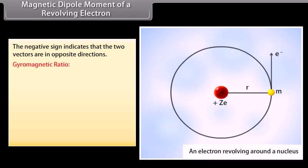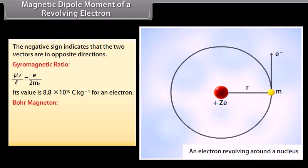The gyromagnetic ratio is μL/L = e/(2me), with a value of 8.8 × 10¹⁰ coulomb per kilogram for an electron. The Bohr magneton is μB = eH/(4πme), which is a constant equal to 9.27 × 10⁻²⁴ A·m².